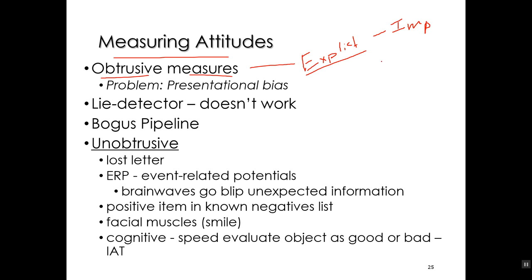We're only getting one side of the story — we're not seeing what these implicit attitudes are. A clear problem is that there's a presentation bias when we're using obtrusive measures. Since people know that we're measuring their attitudes, they will try to present themselves in a way that, number one, is comfortable for them and their self-esteem, and number two, in a way that they think we want them to as psychologists.